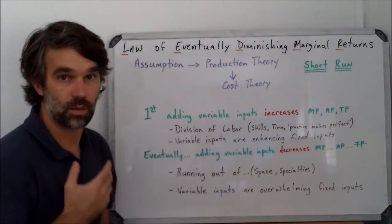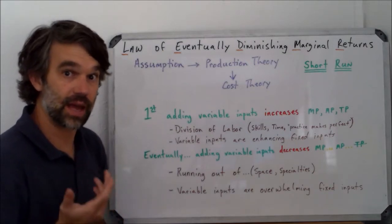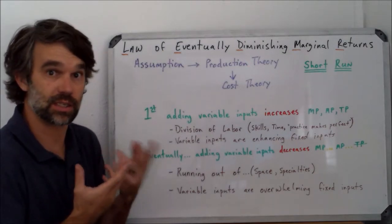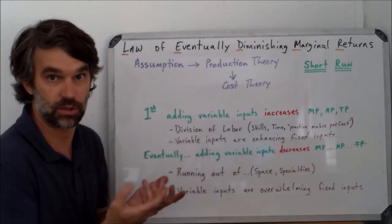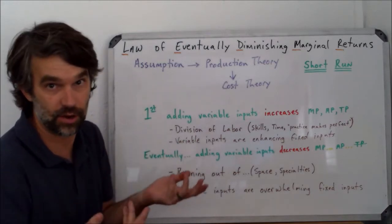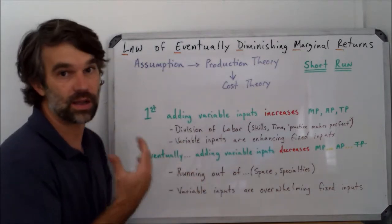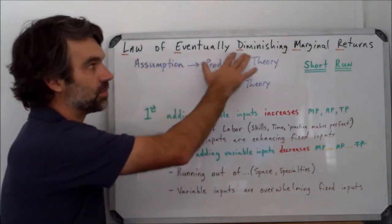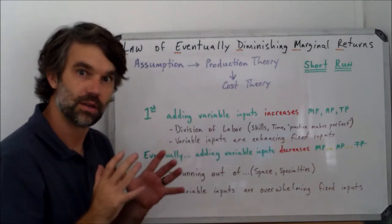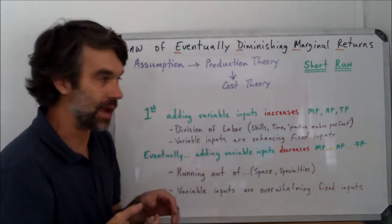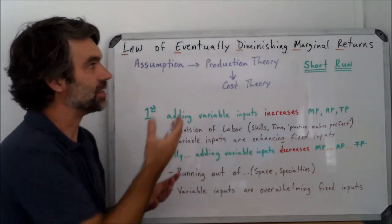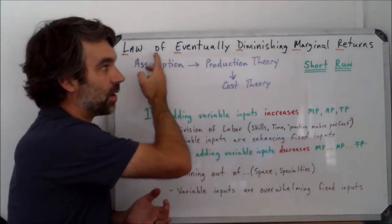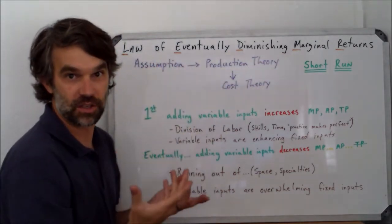As we start looking at what we call production and cost theory—that is, what are the laws that dictate how much a firm can produce, what constraints do they operate under—the number one assumption that we make is the law of eventually diminishing marginal returns. That's a mouthful, I even had a hard time with it, but it is important that we remember all of those parts of the term.